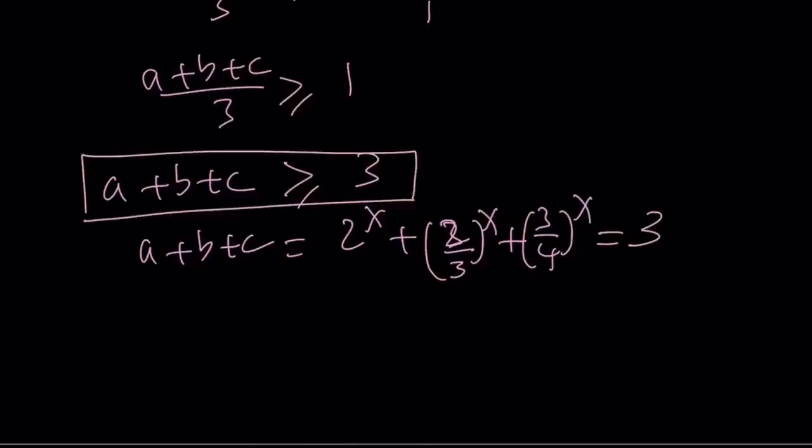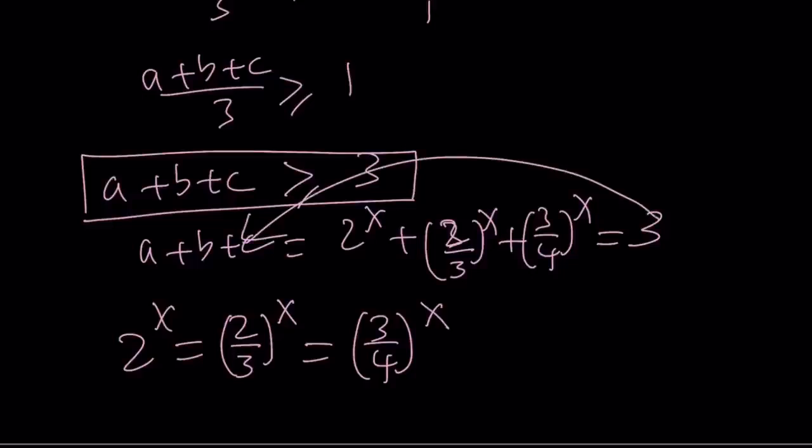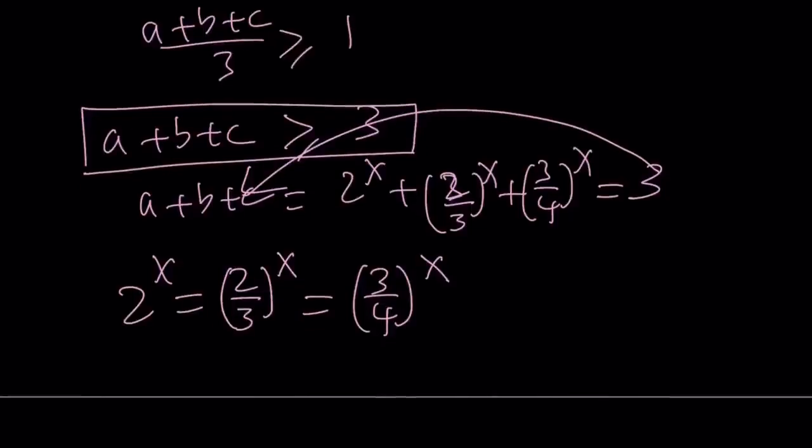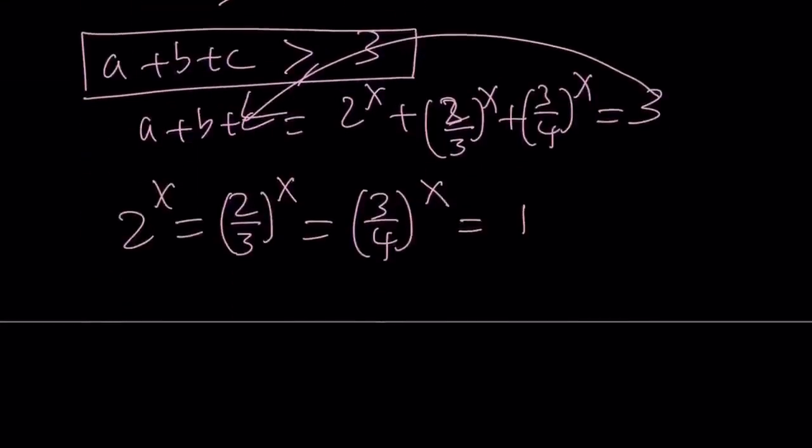So a plus b plus c is equal to 3 when a, b, c are all equal. With the AM-GM inequality, the equality is satisfied when all the numbers or quantities are equal to each other. Which means that 2 to the power x needs to equal 2 thirds to the power x and that needs to equal 3 fourths to the power x in order for a plus b plus c to be 3. Because we have an inequality and that's the lower boundary. This is only true if they're all equal to 1, because their sum is supposed to be 3. So each of them is 1, which means x is equal to 0, and that is going to be our solution.